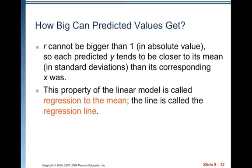This property of the linear model is called regression to the mean. The line is also called the regression line. So regression line, least squares regression line, LSRL, least squares model, linear model, all those things refer to the linear equation that best represents the line.